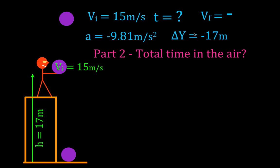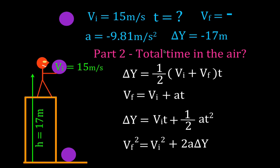We need to get out our kinematic equations and find one to solve for time. The equation that doesn't even contain time cannot be used. In order to select the right equation, it has to contain the time we're looking for, but also the other three variables that we know.